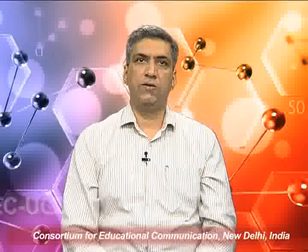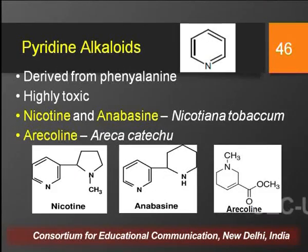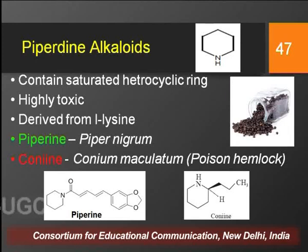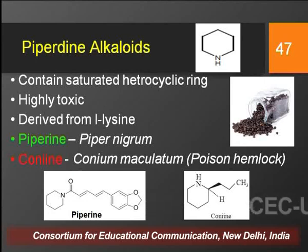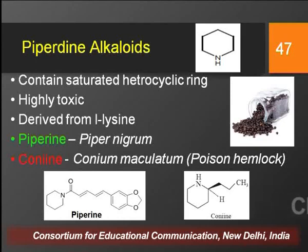Piperidine alkaloids have a piperidine ring in their structure, which is the saturated form of the pyridine ring. These alkaloids are derived from the amino acid lysine. Although some are toxic, some are very helpful to mankind. Common examples are piperine and coniine — piperine is useful whereas coniine is highly toxic.